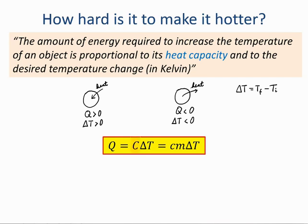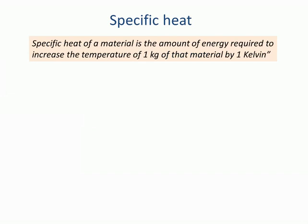The heat capacity C is in turn the product of two independent factors: little c, the specific heat, which is a material-dependent property, and m, the mass of the object. The specific heat of a material measures the energy per unit mass required to increase the temperature by 1 Kelvin. Accordingly, the units are joules per kilogram per Kelvin. We could also call specific heat the specific heat capacity, meaning heat capacity per unit mass.